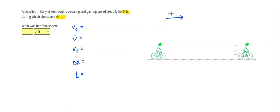So this problem says that steadily gain speed for 5.2 seconds. The seconds right there implies that that is going to be the time, during which she covers 44 meters. Since it's meters by itself and not meters per second, that must be the displacement.